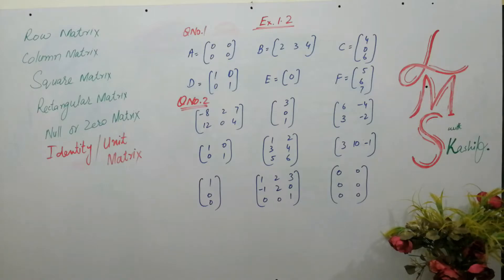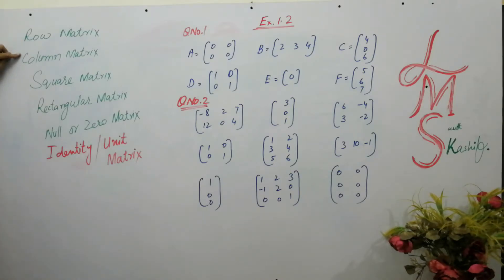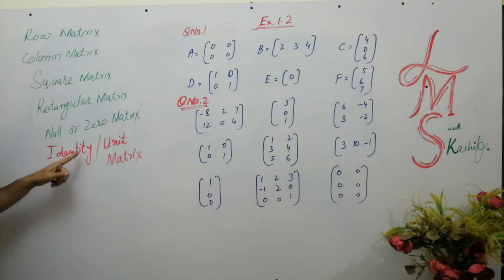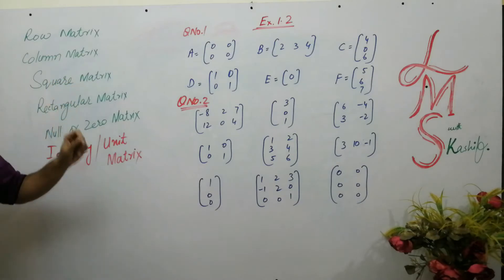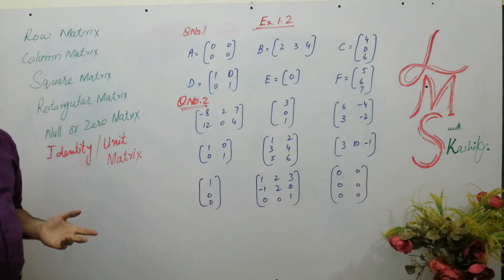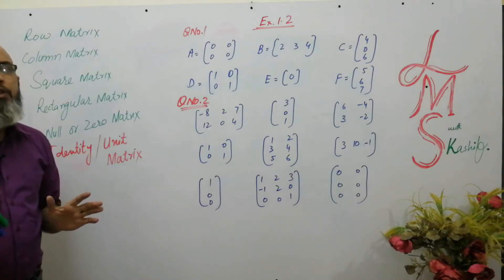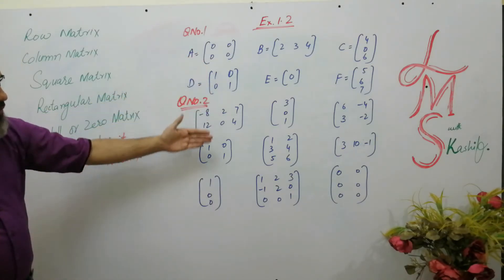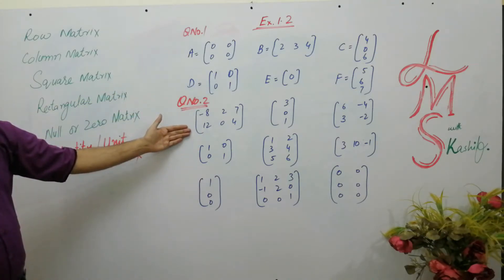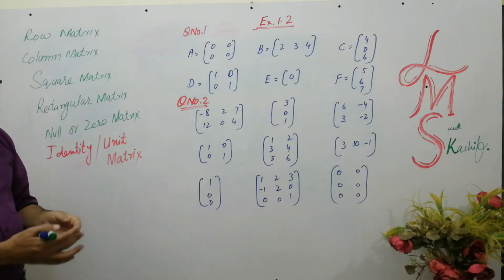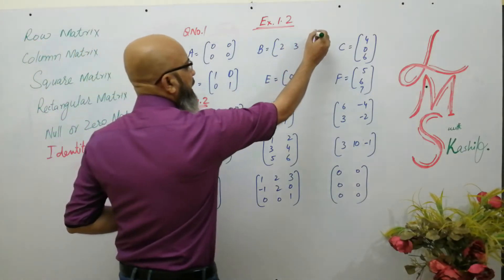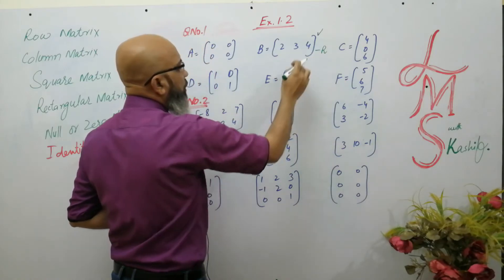Now come to the next definitions. You already studied these in lecture number 1. What is a row matrix? What is a column matrix? What is a square matrix? What is a rectangular matrix? What is a null or zero matrix? And what is an identity or unit matrix? First of all, we discuss row matrix. A row matrix means a matrix which has only one row. I wrote a lot of matrices in front of you. If I ask you to identify the row matrix, which matrix has only one row? That is called a row matrix.